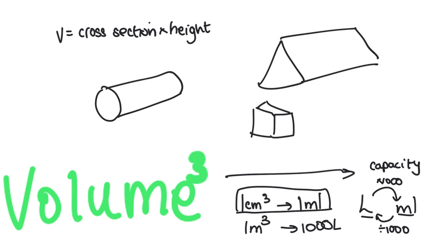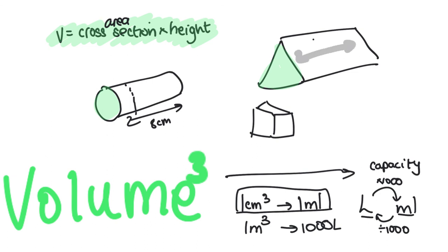The volume of any prism is easy to find using this formula: volume equals the area of the cross-section times the height. For a cylinder, find the area of the circular cross-section using pi times r squared, then multiply by the height. For a triangular prism, find the area of the triangular cross-section and multiply by the height. For a cube, find the area of the square face times its height. The same process applies to all volume calculations.